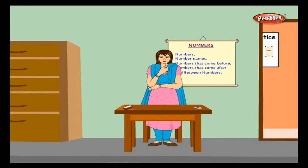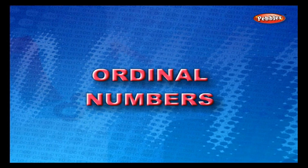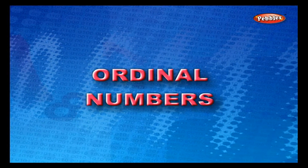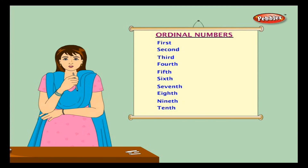In our previous class we learned about numbers, number names, numbers that come before, numbers that come after, and numbers between. Now let us learn more: ordinal numbers. Ordinal numbers tell us the position of an object in a row or in a column.